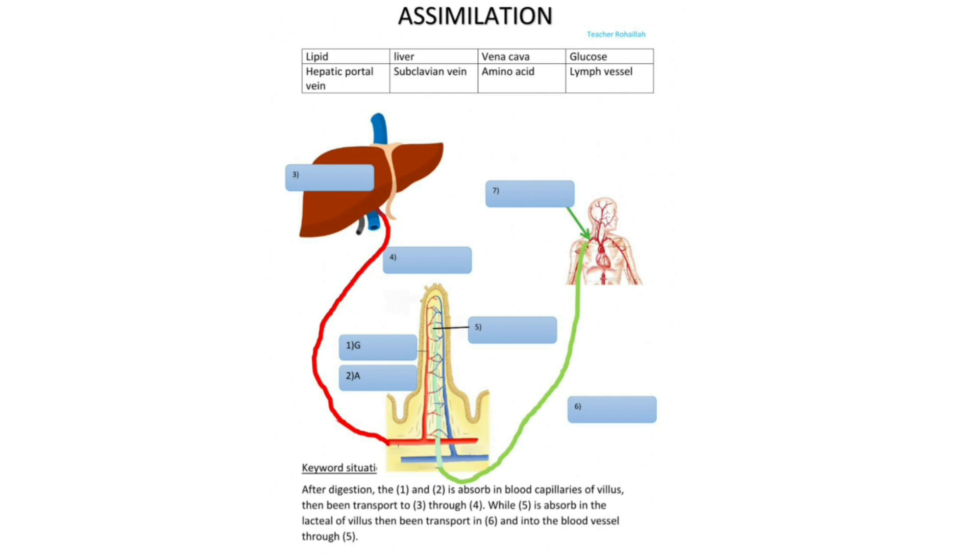The digestion of proteins, fats, and carbohydrates is completed in the small intestine. Actually, after that, the absorption of the digestion procedure takes place in the small intestine. These are the processes of assimilation that I discussed.